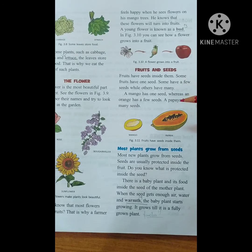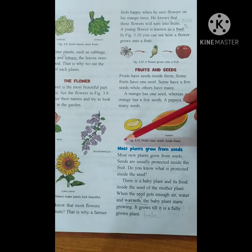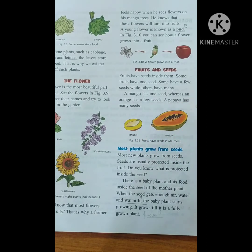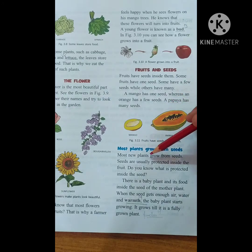Vegetables also consist of seeds — even the tomato is considered a fruit, not a vegetable. Most new plants grow from seeds. Seeds are usually protected inside the fruit. Do you know what is protected inside the seed? A baby plant is always protected inside the seed.